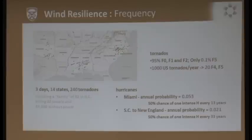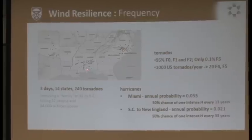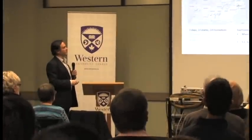The map tells the story of those three days in 2011 when tornadoes happened over 14 states — 240 tornadoes registered, producing lots of damage to property and leaving many people without power. For hurricanes, the chance of a hurricane hitting Miami is 50% every 13 years. We are currently due for a big one because the last was Hurricane Andrew, more than 15-16 years ago. As you migrate north, that probability drops significantly — in New England it's roughly one strong hurricane every 33 years.